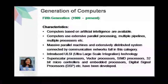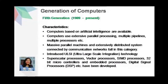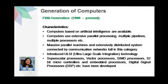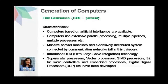The fifth generation is the latest generation of computers and it started in the year 1989. Some examples are IBM notebooks, Pentium PCs, and Sun workstations. In this generation, computers are based on artificial intelligence. Computers use extensive parallel processing, multiple pipelines, and multiple processors. Massive parallel machines and extensively distributed systems connected by communication networks fall in this category.